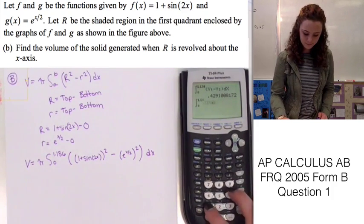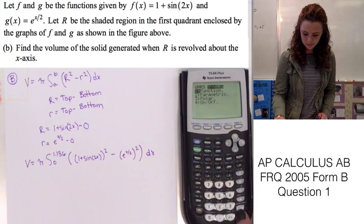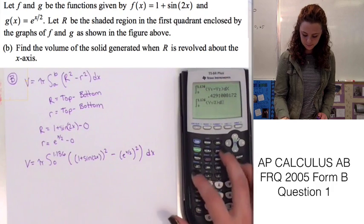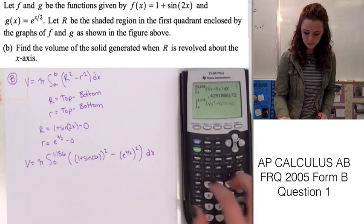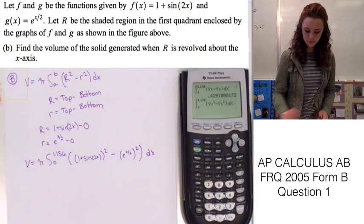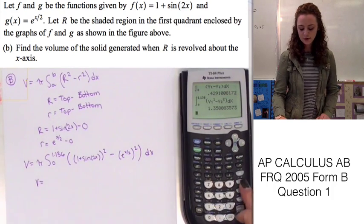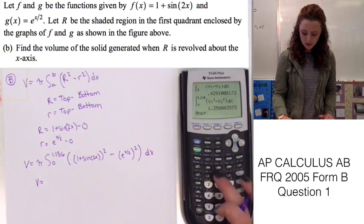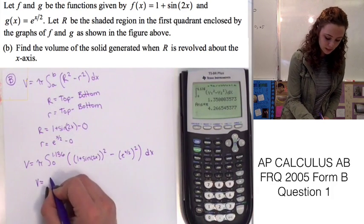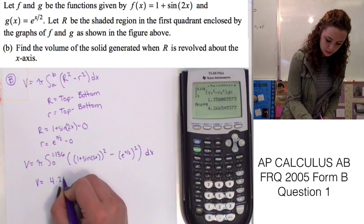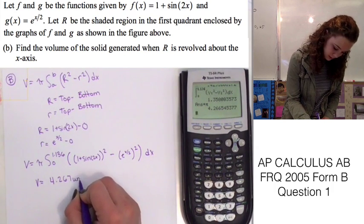We have all the values, so let's go ahead and use math 9 and plug it into our calculator. Don't forget to multiply by pi in order to get the correct answer. We end up with the volume equaling 4.267 units cubed.